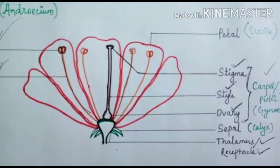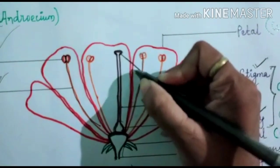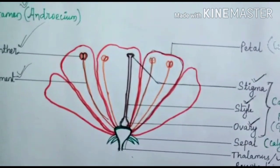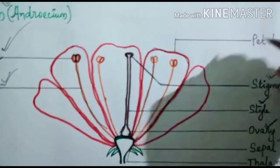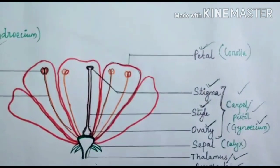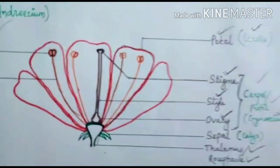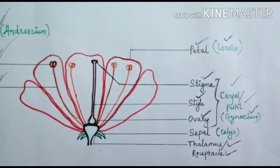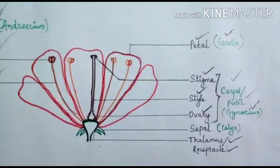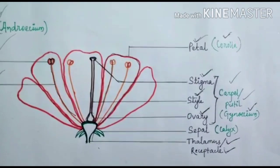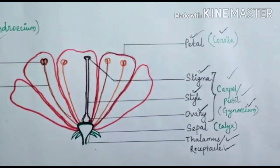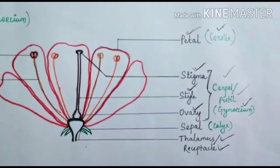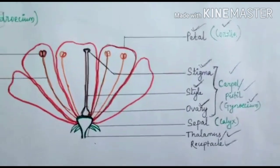Next to the androecium there are petal-like structures which are brightly colored. These are called the petals. All these petals constitute the corolla. This corolla is brightly colored and it attracts insects for pollination.